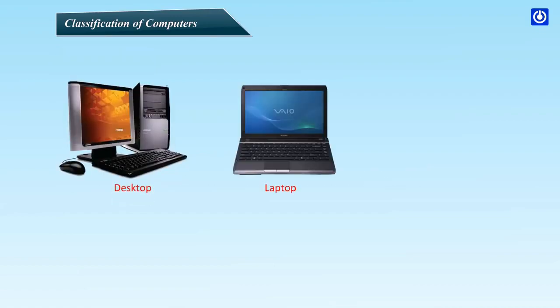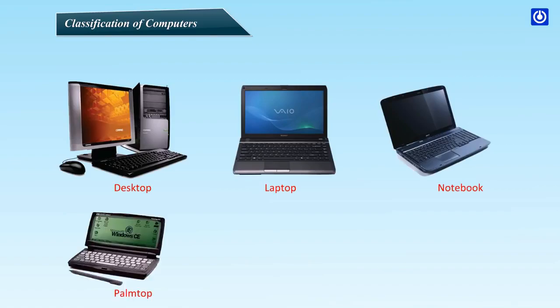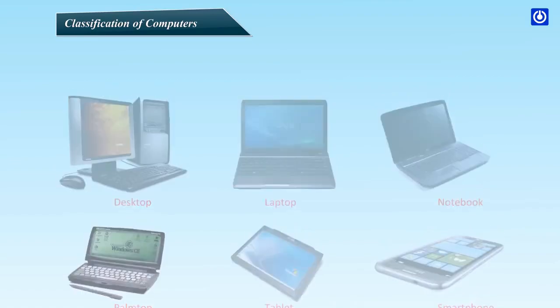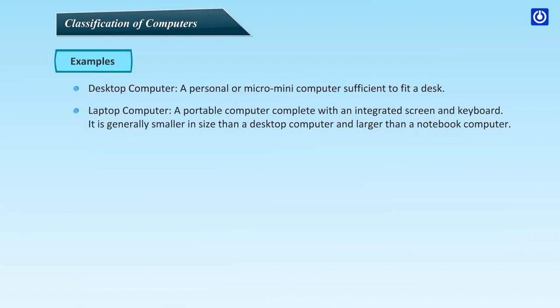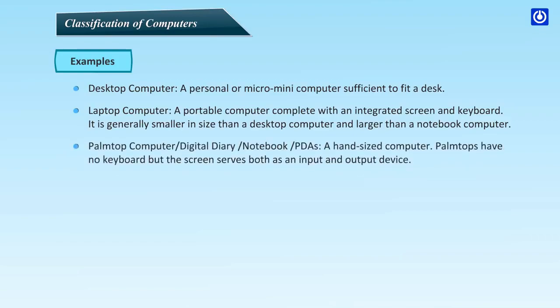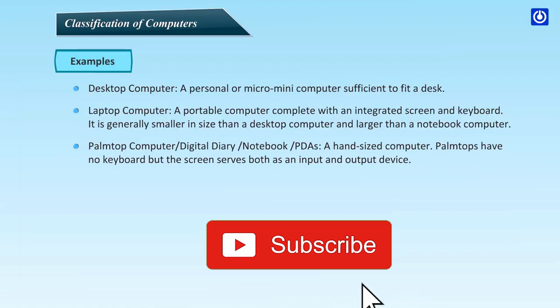Examples include: Desktop Computer — a personal or micro-mini computer sufficient to fit on a desk. Laptop Computer — a portable computer complete with an integrated screen and keyboard, generally smaller than a desktop and larger than a notebook. Palm Top Computer — a hand-sized computer. Palm Tops have no keyboard; the screen serves as both input and output device.